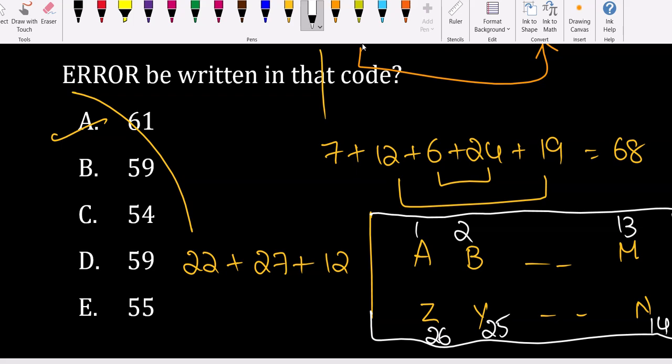Don't write twice - many people write A to Z with 1 to 26, then write 26 to 1 again. That's a waste of time. The third advantage is opposite pairs: A and Z are opposite, B and Y are opposite, M and N are opposite.